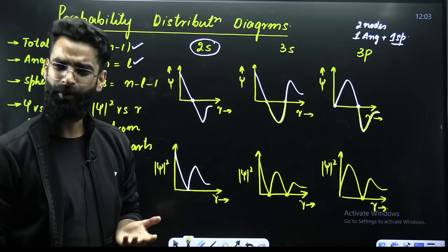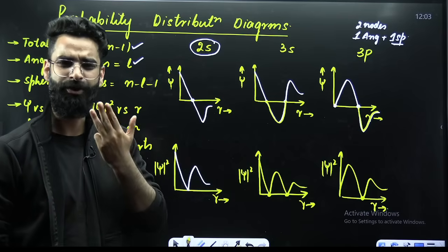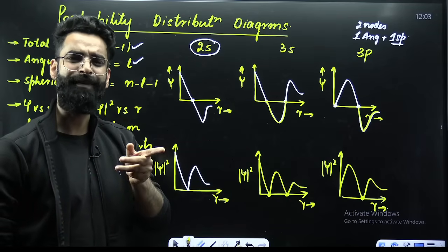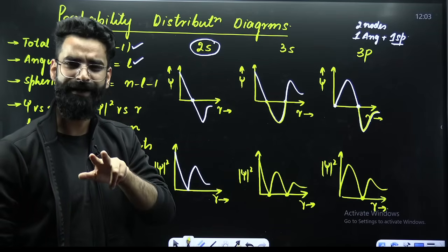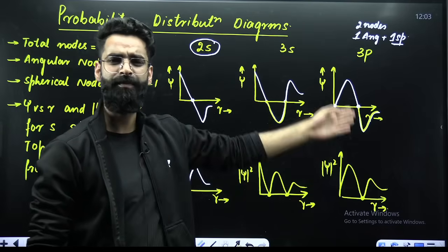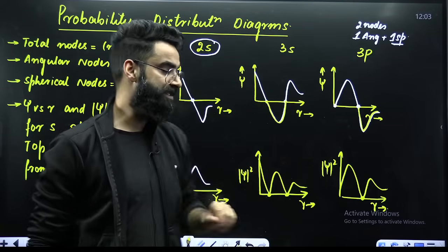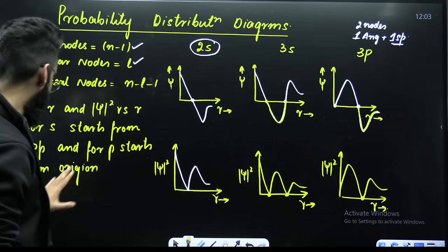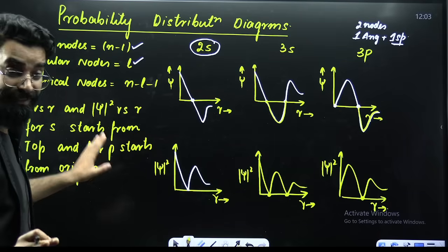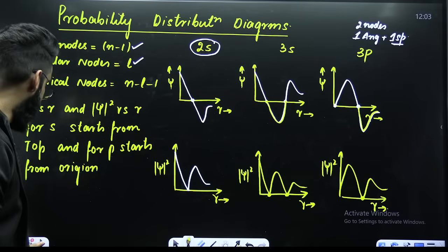Similarly, you can make these graphs for 4p as well. In case of 4p there will be in total three nodes, out of which one will be angular and two will be spherical — you will have to represent those two spherical nodes. This was a short question which is surely going to be asked in the NEET 2024 examination.